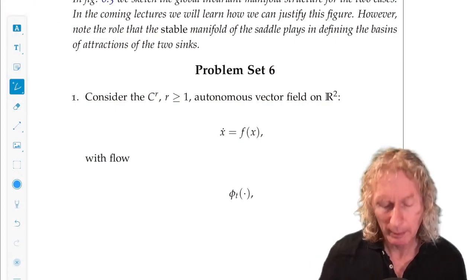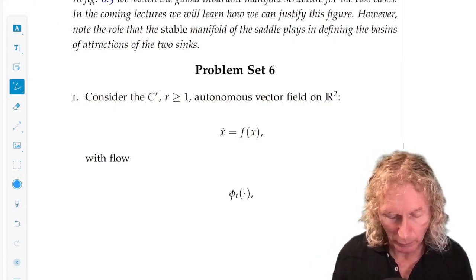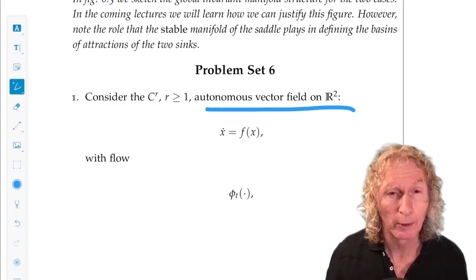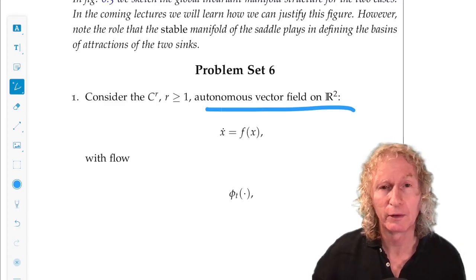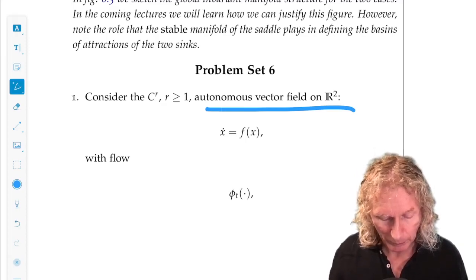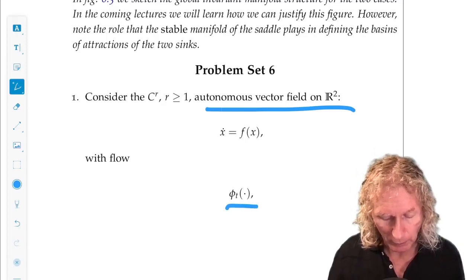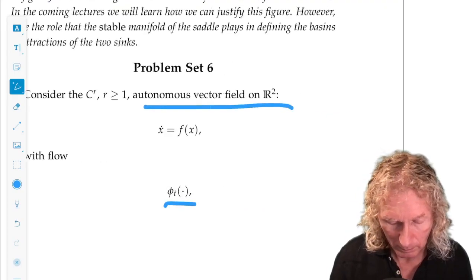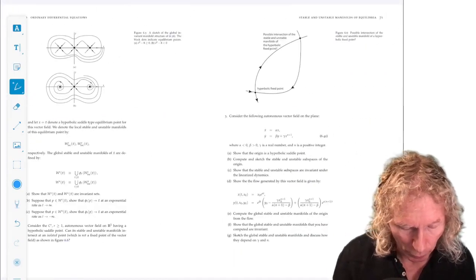So the setup for the first problem is it's an autonomous vector field on the plane, C^r, r greater than or equal to 1, so we have existence and uniqueness of solutions, and we're going to denote the flow by phi sub t in the usual way.